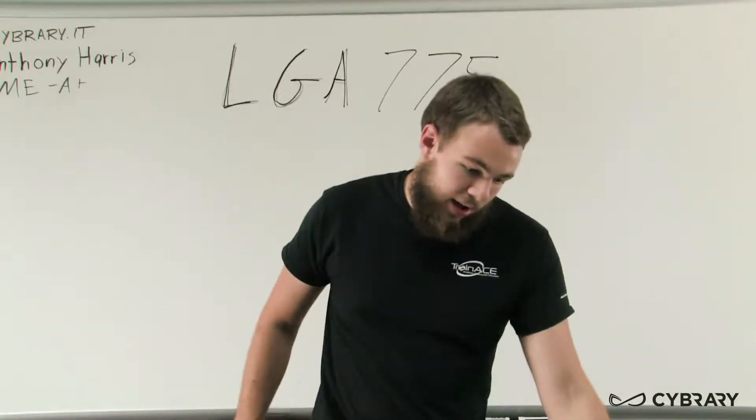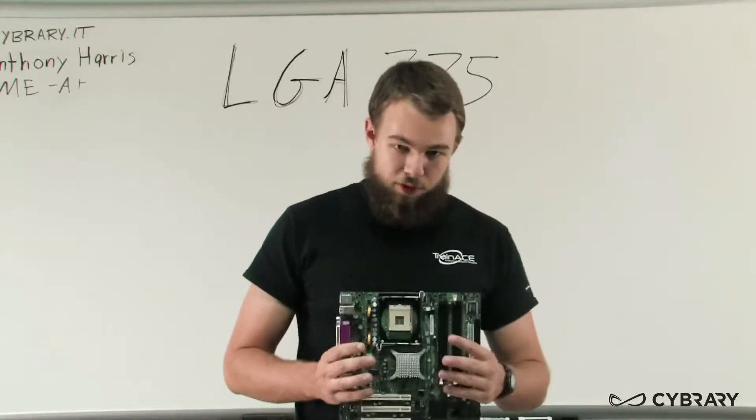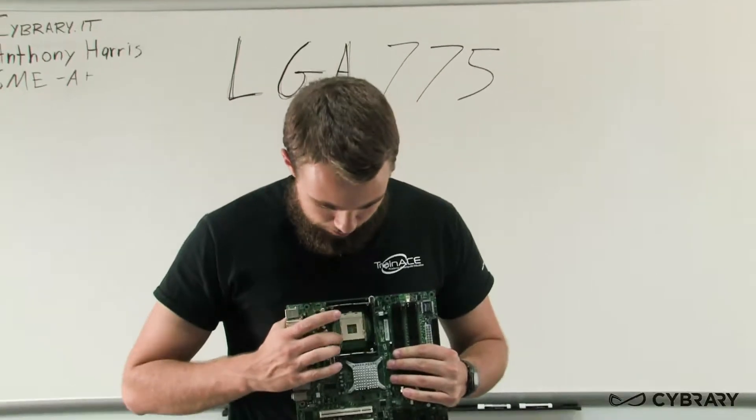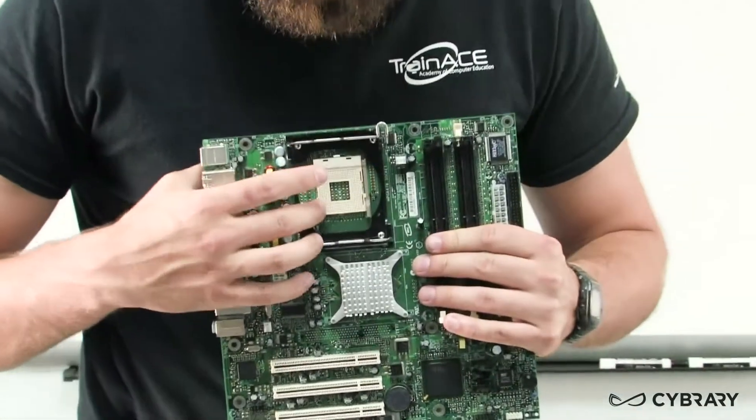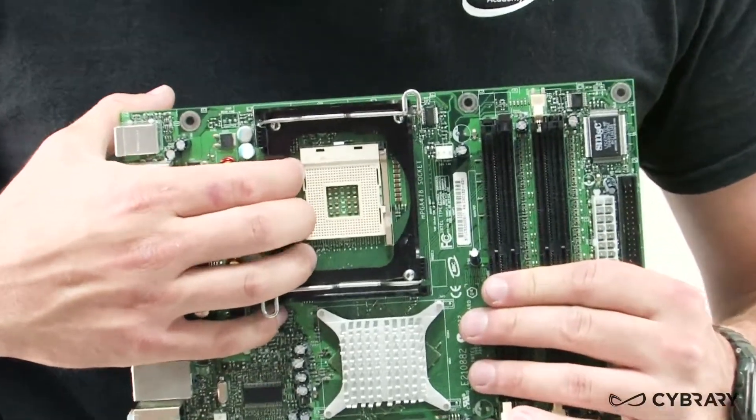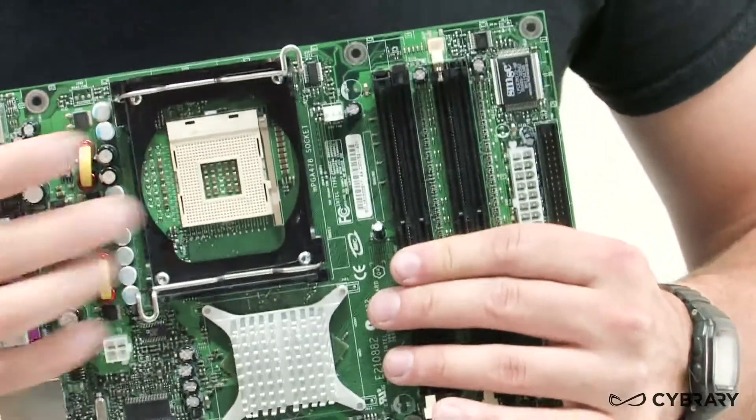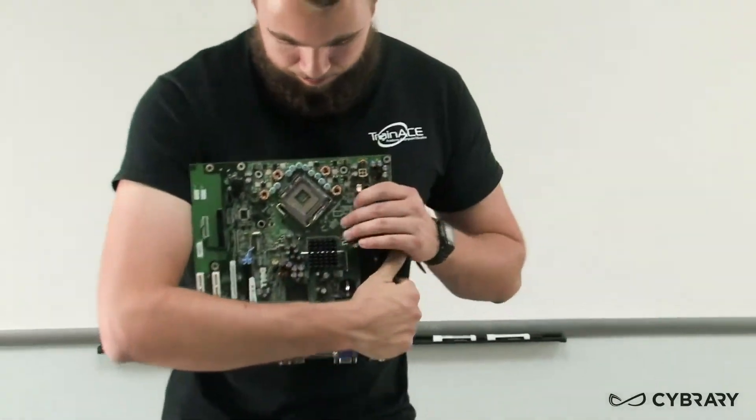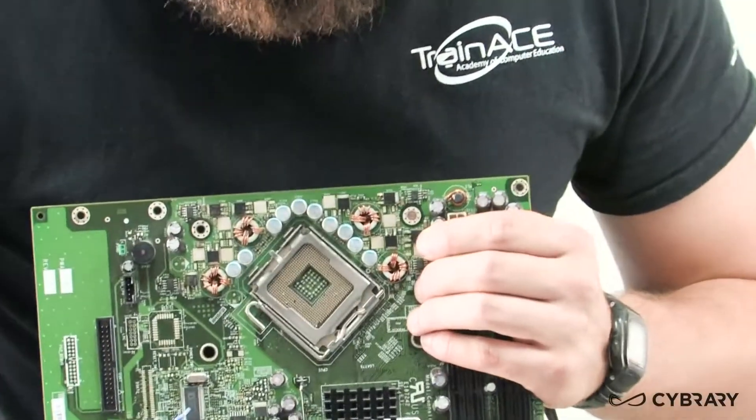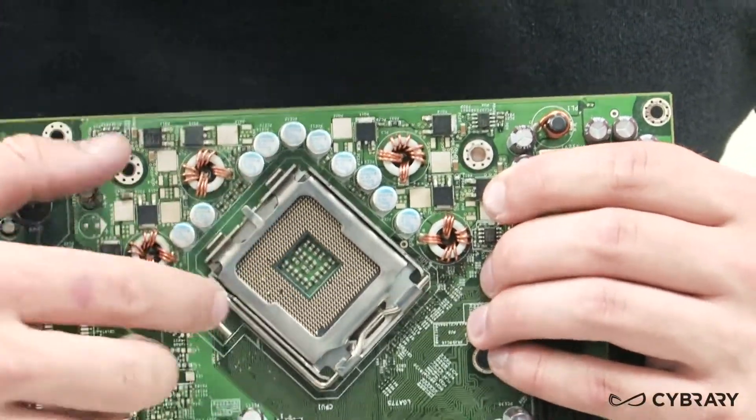Now when we say socket what are we talking about? Well the actual socket on our motherboard for CPU is something like this. It's the actual location where our CPU connects with our motherboard. That's what we're going to call the socket. Now this socket is not a LAN grid array socket but we do have one on this motherboard here. Now as we can see our LAN grid array socket has the pins for our CPU on the motherboard itself.